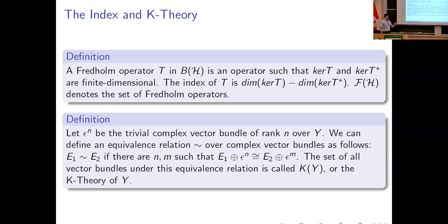I want to link this back to index theory. A Fredholm operator is one that has finite-dimensional kernel and whose adjoint has finite-dimensional kernel, and you can calculate the index by taking the difference of the dimensions of those kernels. For a single operator, it's determined by the kernel and the kernel of its adjoint. As we move to families of operators, we want this to be true as well — we want the index to be defined by the kernel of the family and the kernel of the adjoint of the family. This brings in vector bundle K-theory: if I have a family of kernels, the hope is that they form a vector bundle.